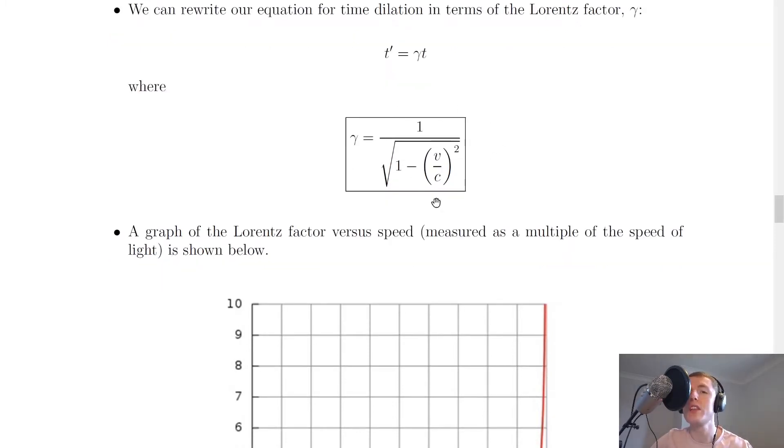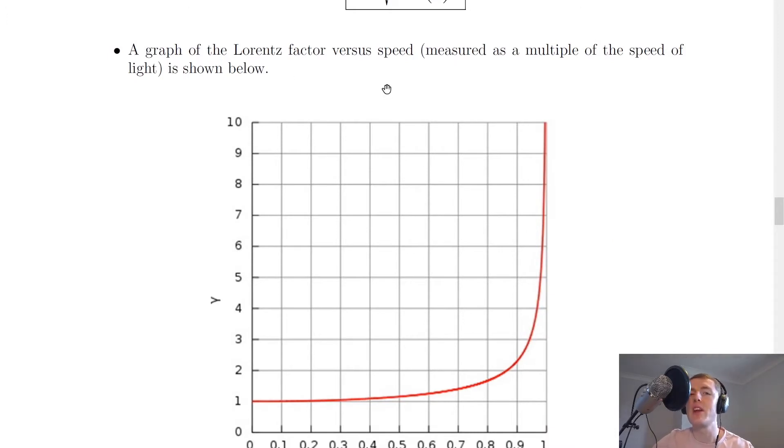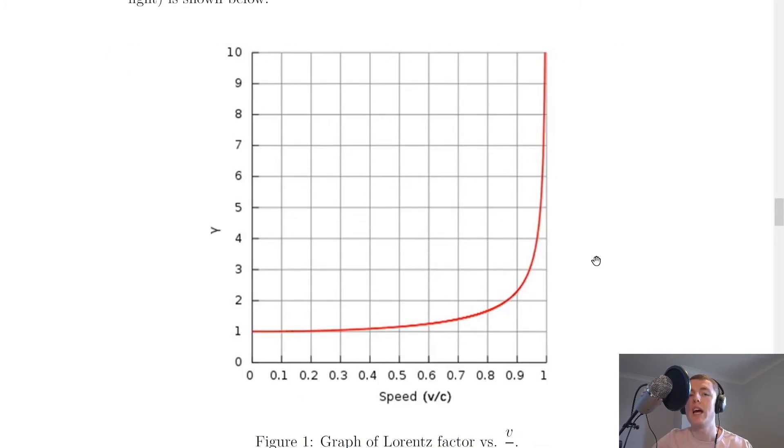Now we can look more closely at this equation and try and make sense of it. It shows here a graph of the Lorentz factor versus speed, which is measured as a multiple of the speed of light. So we're plotting the Lorentz factor gamma on the y-axis against the speed on the x-axis, which is a fraction of the speed of light, so it's v divided by c.